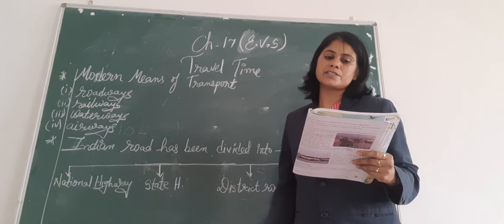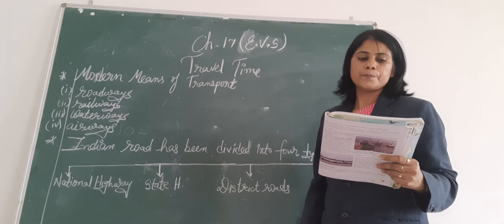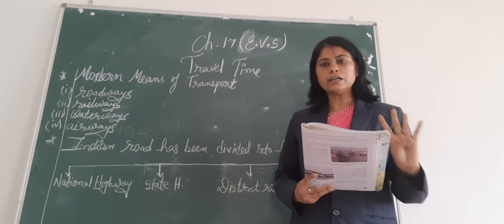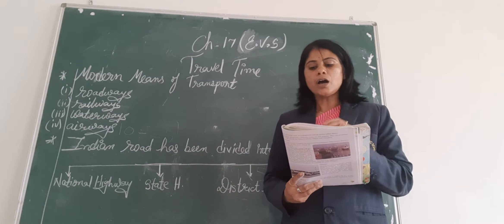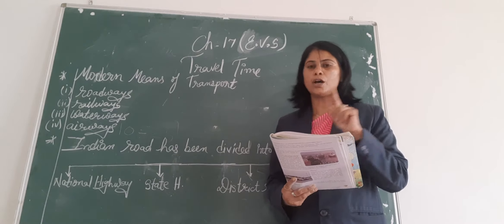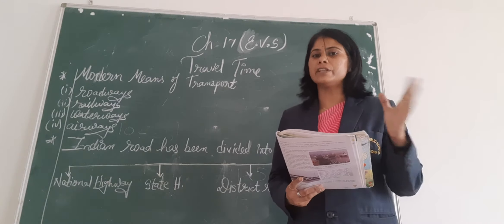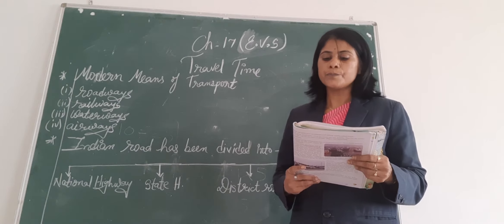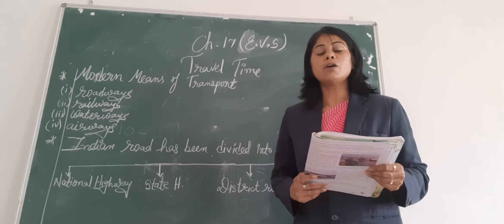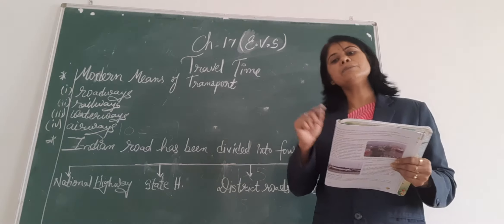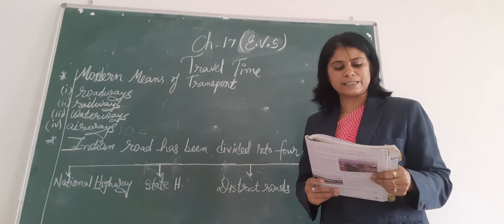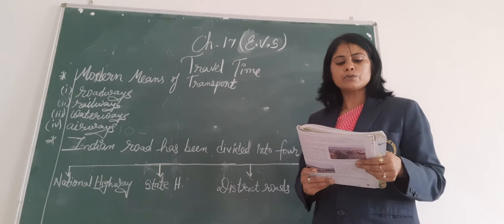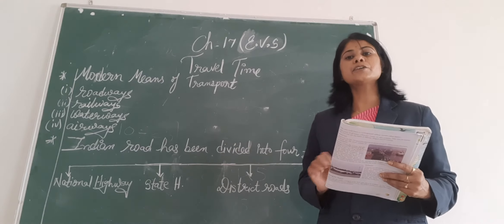India has the world's third largest network of roadways. It has both kaccha and paka roads. Kaccha roads are found mainly in villages, while paka roads are found in towns and cities. Paka roads are also called all-weather roads because they can be used at any time of the year, even in the rainy season. India's roads have been divided into four types.